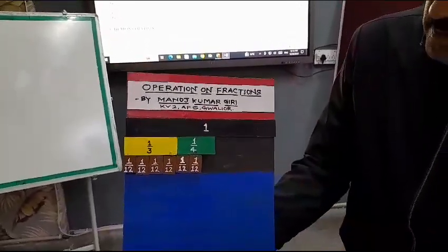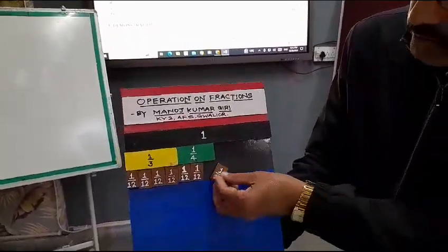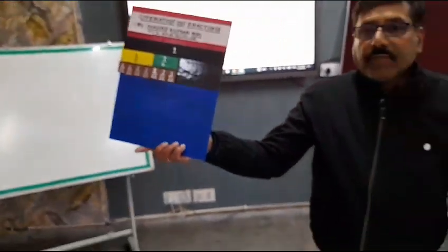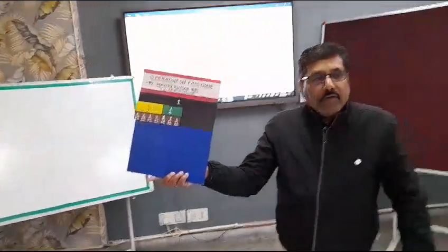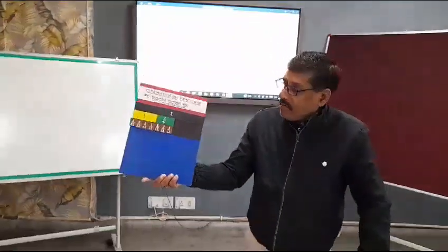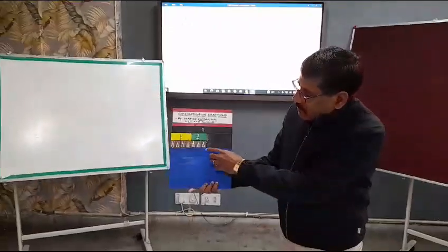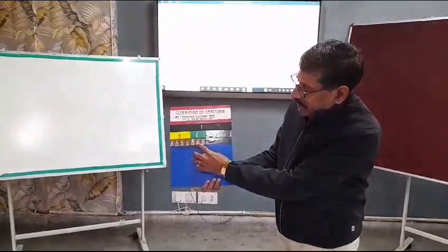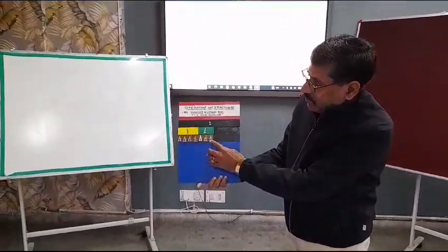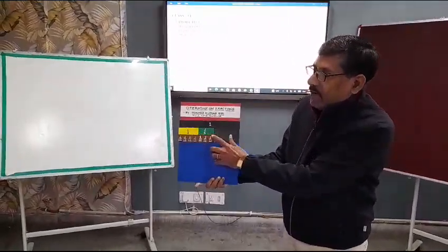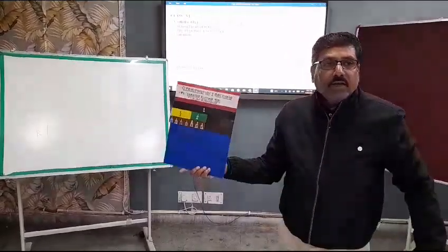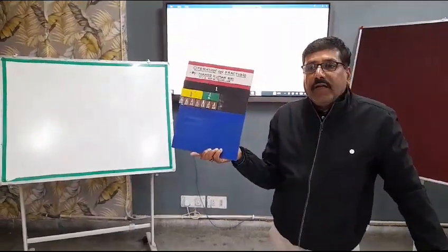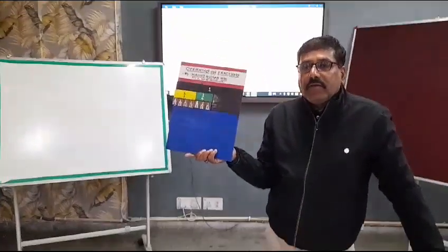And then we count them: 1, 2, 3, 4, 5, 6, 7. So the sum of 1 upon 3 and 1 upon 4 is 7 by 12.